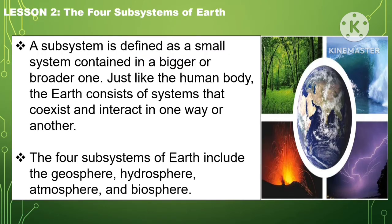A subsystem is defined as a small system contained in a bigger or broader one, just like the human body. The Earth consists of systems that coexist and interact in one way or another. The four subsystems of Earth include the geosphere, hydrosphere, atmosphere, and biosphere.